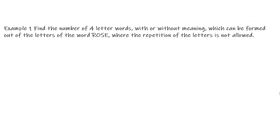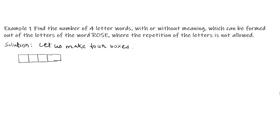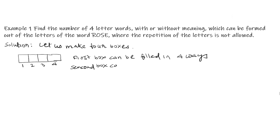which can be formed out of the letters of the word ROSE, where the repetition of letters is not allowed. Solution: Let us make 4 boxes. The first box can be filled in 4 ways — that is, the first box can be filled by either R, O, S, or E. So the first box can be filled in 4 ways. The second box can be filled in 3 ways.